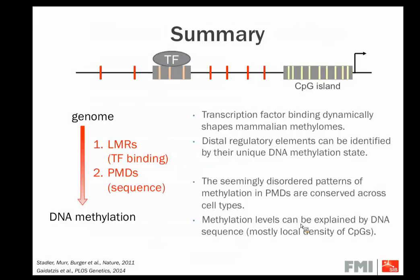To summarize the methylation part: I showed you two kinds of patterns caused by DNA sequence. The first is driven by transcription factor binding creating LMRs, which likely correspond to active enhancers. The second — PMDs — probably reflects the preference of the methylation machinery in heterochromatic regions. These are examples of what you can pull out from NGS data in addition to why people generate them in the first place.